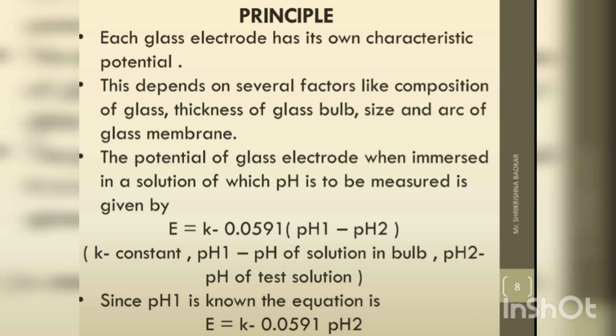The potential of a glass electrode when immersed in a solution of which pH is to be measured is given by: E = K − 0.0591(pH1 − pH2). K is a constant that depends on the nature and composition of the glass. pH1 is the pH of the internal solution, which is known, so the equation simplifies to: E = K − 0.0591 × pH2.